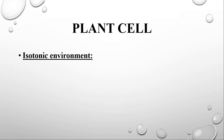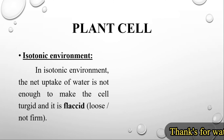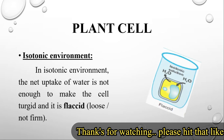Next, the plant cell is discussed in an isotonic environment. That means the amount of solute inside the cell equals the amount of solute outside. In an isotonic environment, the net uptake of water is not enough to make the cell turgid, and it becomes flaccid. Turgidity is very fruitful for the plant cell, but in isotonic conditions the cell is flaccid.